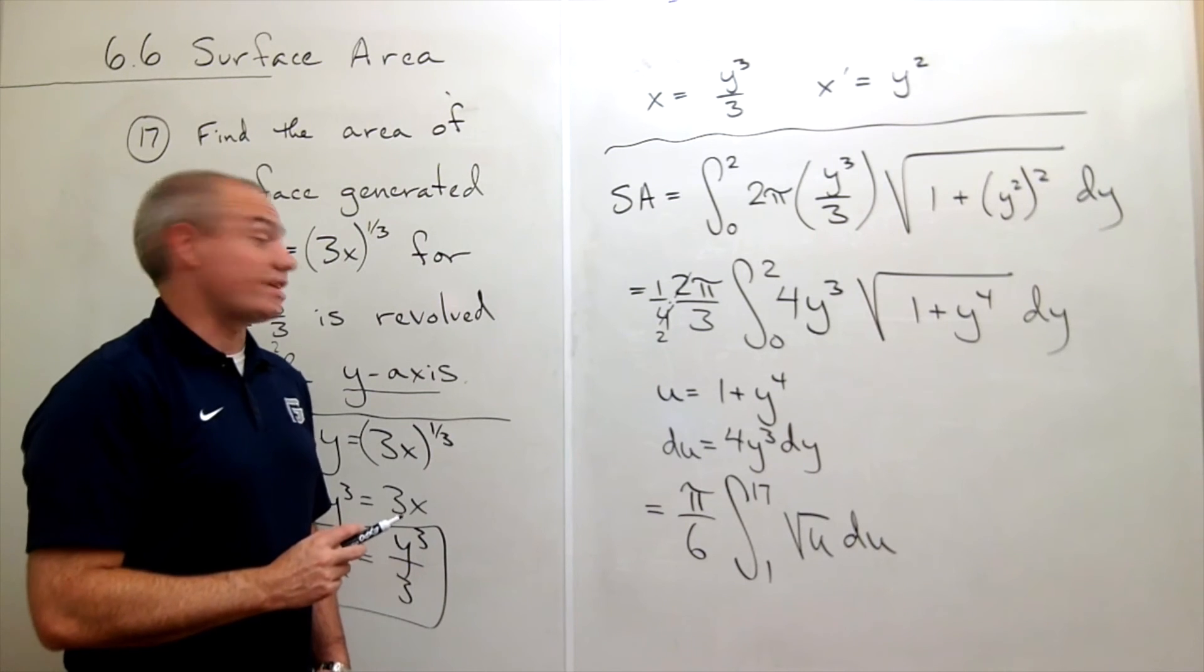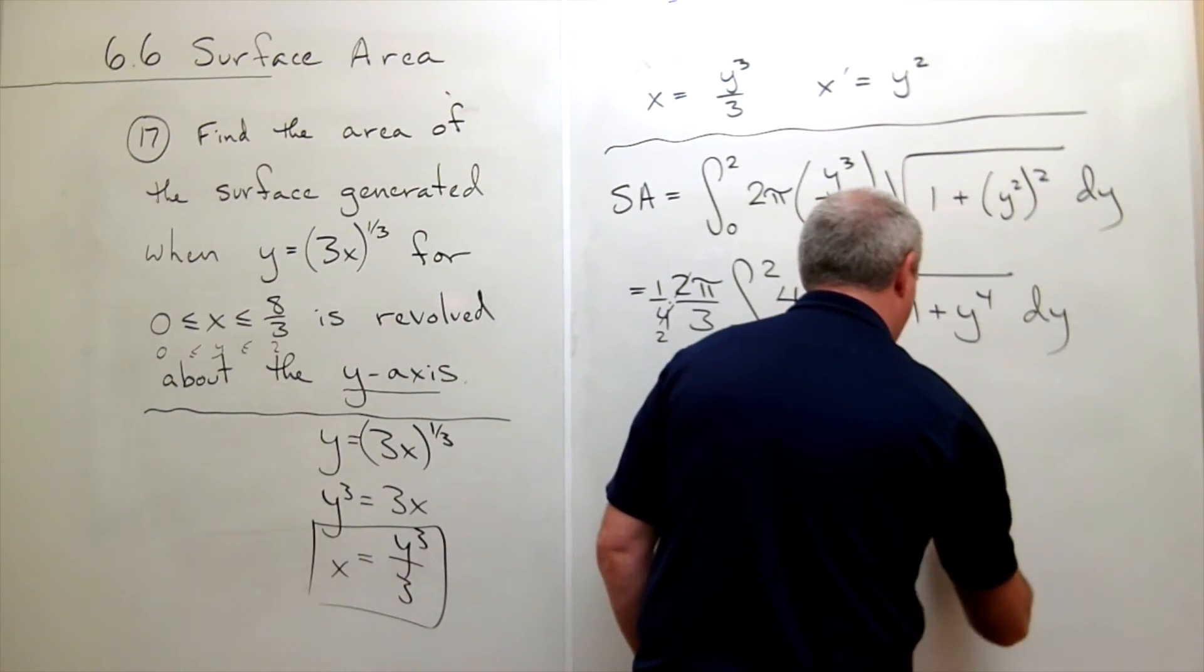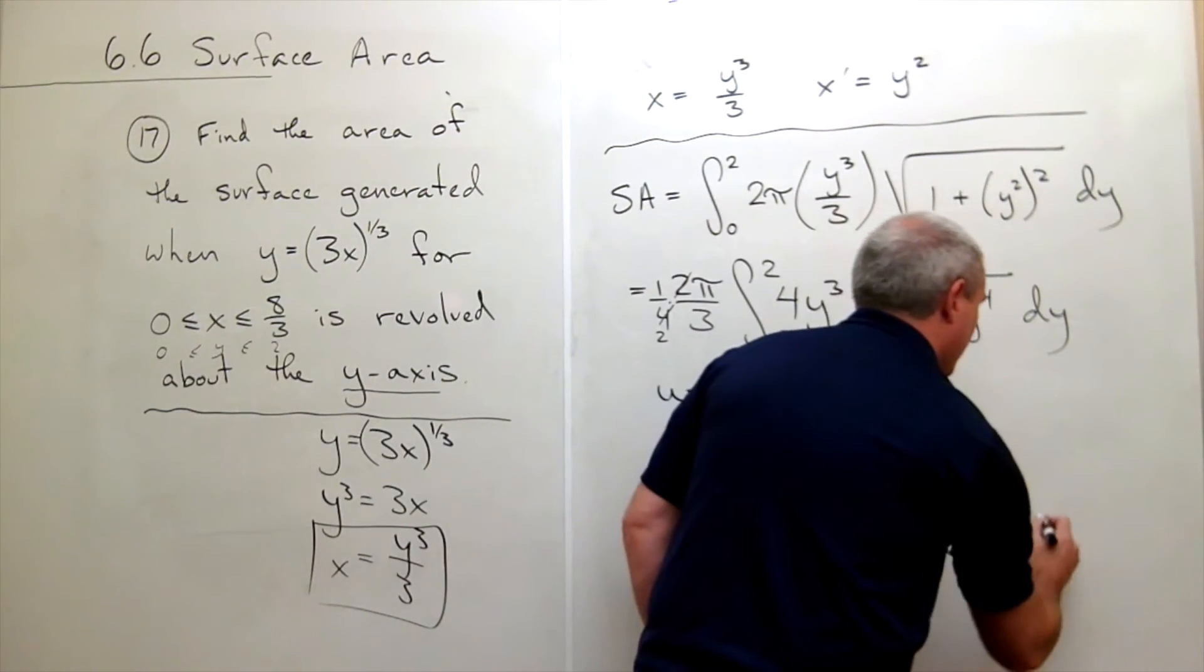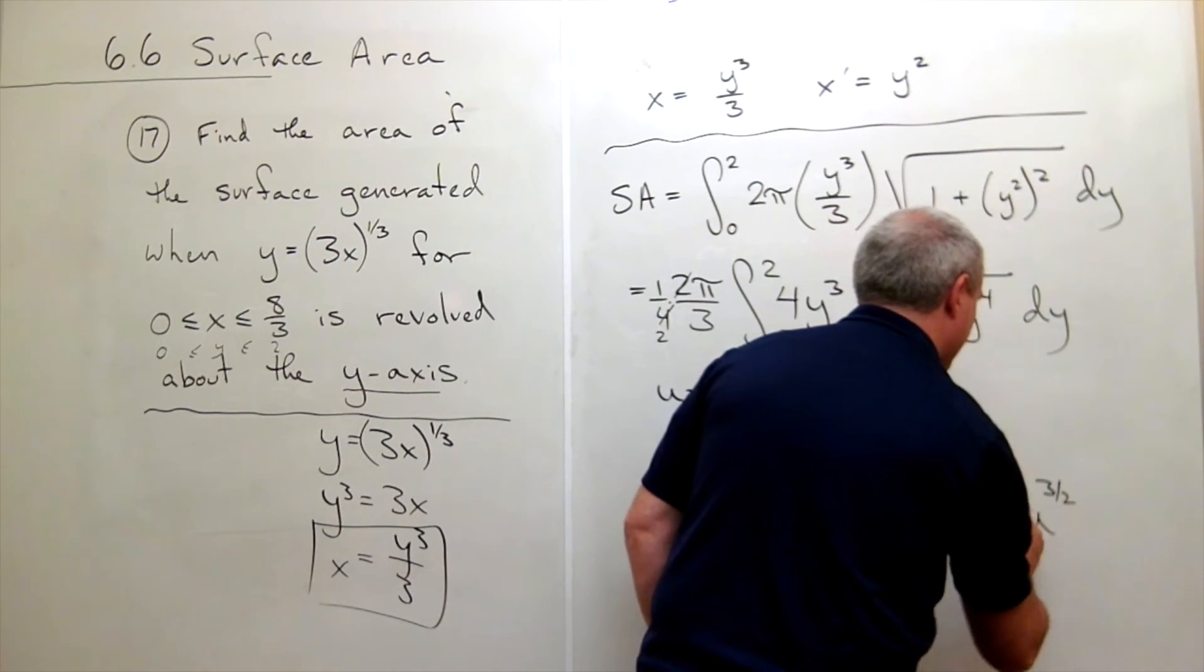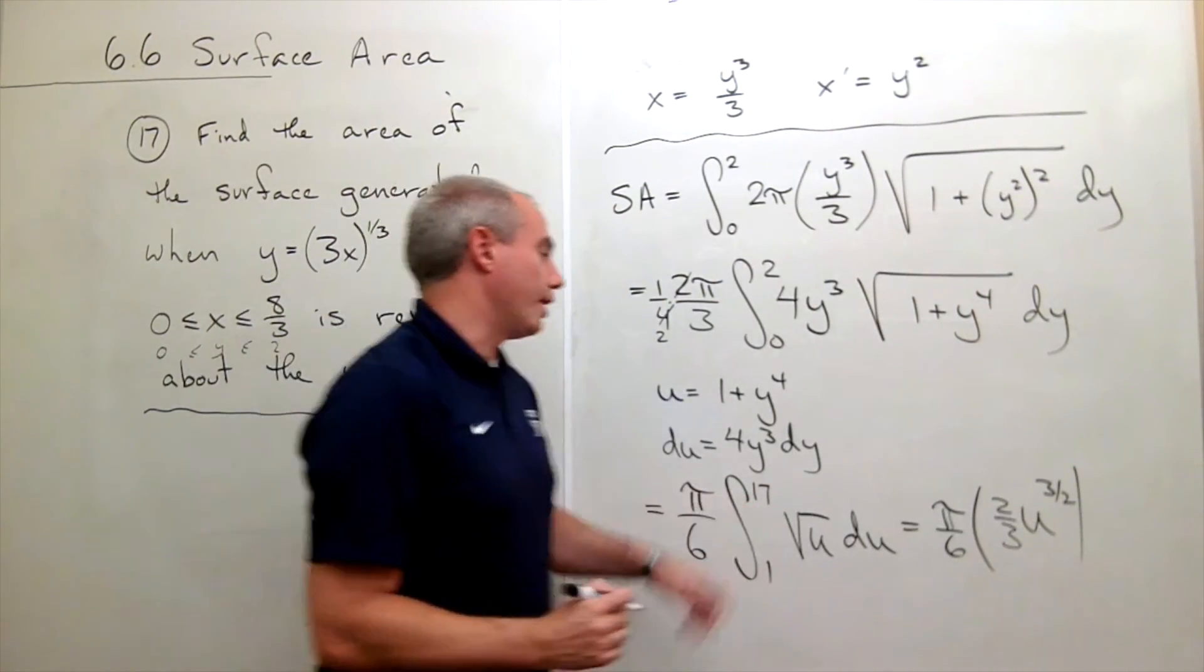Now we're ready to take an antiderivative. I still have my π over 6 on the outside. Antiderivative of square root of u is u to the 3/2 times 2/3, evaluated from 1 to 17.